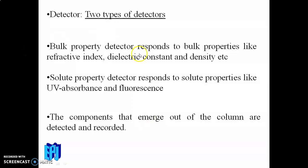There are two types of detectors. The bulk property detector responds to bulk properties of the solution such as refractive index, dielectric constant, and density. The solute property detector responds to properties of the solute itself, such as UV absorbance and fluorescence — useful when components contain chromophores or auxochromes. The components that emerge from the column are detected and recorded.